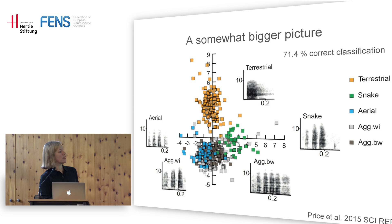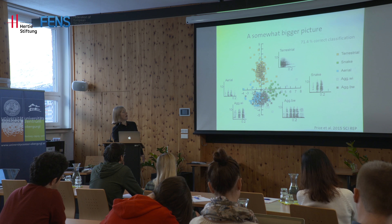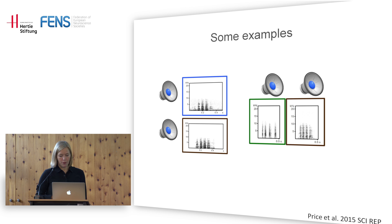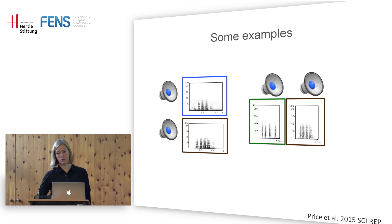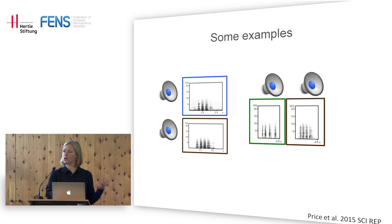The correct classification goes down quite a bit, with most confusion occurring between the overlapping contexts, while terrestrial alarm calls still stand out. From the same animal, an aerial alarm call and a call given during within-group aggression can sound very similar. For snake and aggression calls by the same animal, there's some variation but also striking similarity — you'd be hard-pressed in the field to make a guess about what was going on.